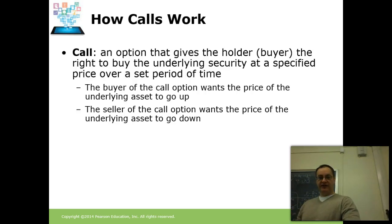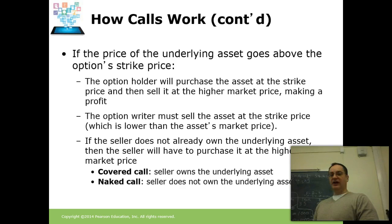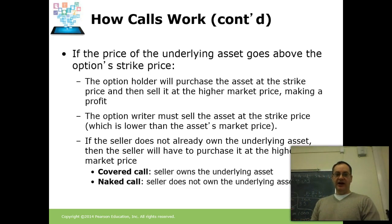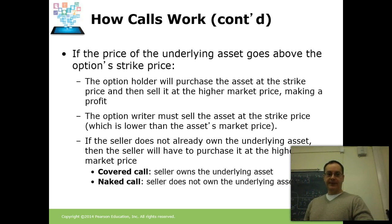If you're the buyer, you want the stock price to go up. If you're the seller or the writer of the contract, you want the stock price to go down, because then the contract won't execute and you won't owe any money. If the price of the underlying asset goes above the strike price, you have a profitable contract — you can buy it at a lower price and sell it at a higher price. The person who writes the contract has to sell it to you at the strike price because that's written in the contract, and the strike price does not change. The due date of the contract does not change. The only things that change are the stock price and the premium or value of the contract over time.